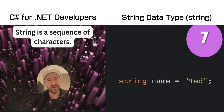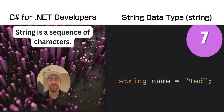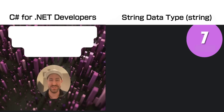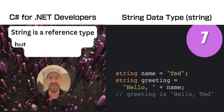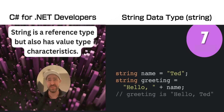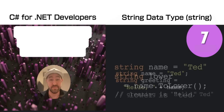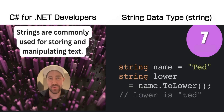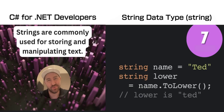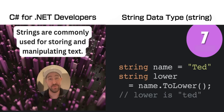Next is the string data type. This represents more than one character, so a word or a sentence. A string is a reference type but also has the characteristics of a value type. You normally use strings to manipulate and store text as a whole.